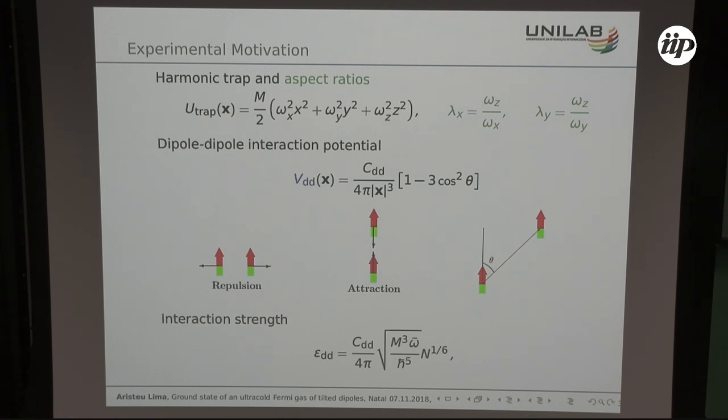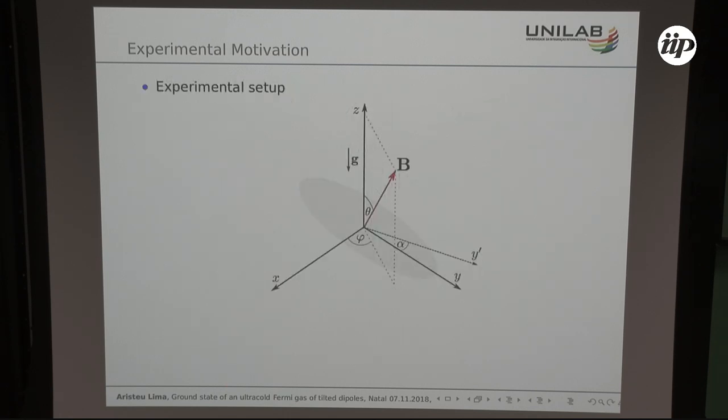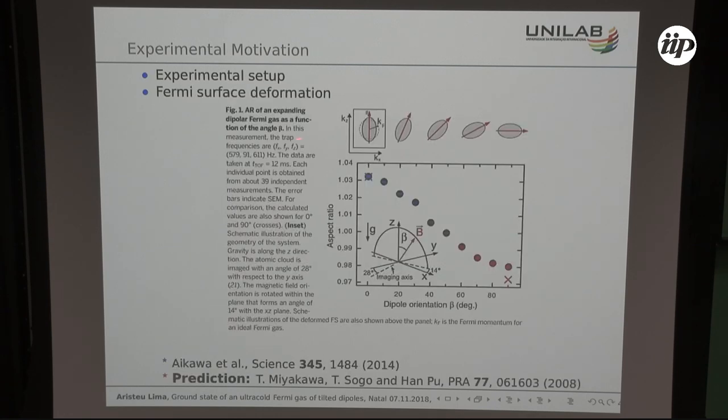We have an experimental setup which looks like that. We have our three axes here, but imaging can be made along different axes different from the ones of the traps. And dipoles can be arranged in an arbitrary direction with respect to the z-axis, so you can switch the direction of the dipoles by changing theta and phi in your arrangement.